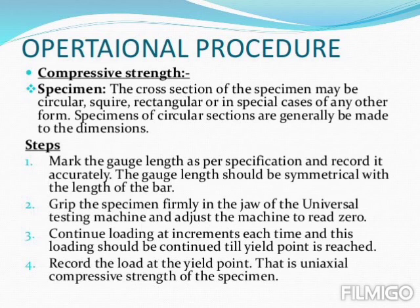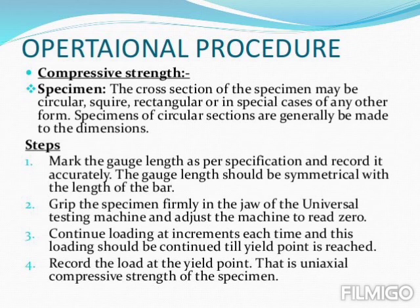Specimens of circular sections are generally made to particular dimensions. Steps for calculating compressive strength: mark the gauge length as per specifications and record it accurately — the gauge length should be symmetrical with the length of the bar. Grip the specimen firmly in the jaw of the UTM and adjust the machine to read zero. Continue loading at increments until the yield point is reached, then record the load at the yield point, which is the uniaxial compressive strength of the specimen.